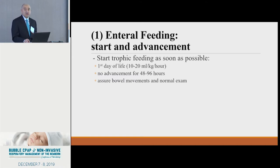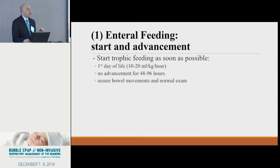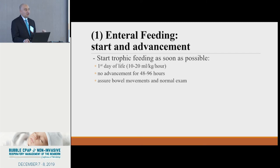Start slowly — 10 to 20 cc per kilogram per day, not per hour — with no advancement for 48 to 96 hours. For babies more than 1,500 grams, if they have bowel movement and are fine, start advancing after a day or two. For smaller babies, less than 1 kilo, give them longer time until you achieve a good bowel movement, then start to advance. Start at 10 per kilo, go up to 20 per kilo, hold until you are stable, and then advance.